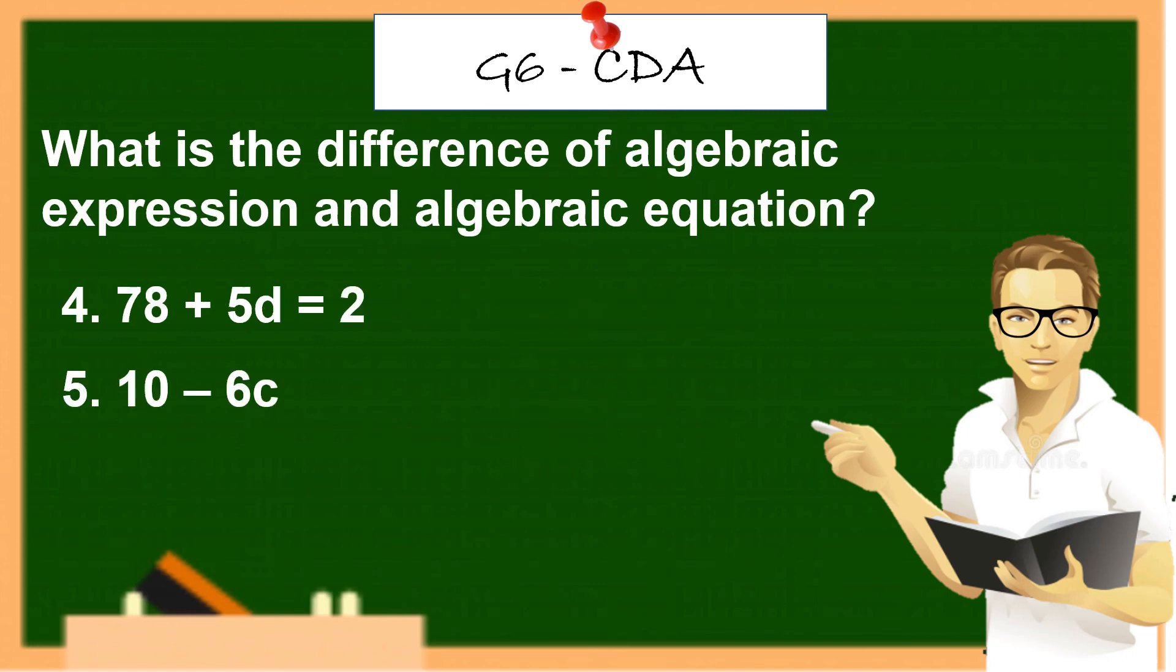What is the difference of algebraic expression and algebraic equation? Take a look and observe for number 4 and 5. 78 plus 5D is equals to 2. Can you find it? Yes! Number 5, 10 minus 6C. Number 4 is an equation and number 5 is an expression.